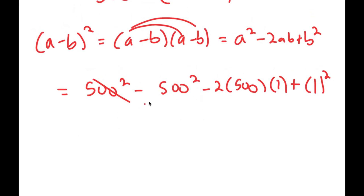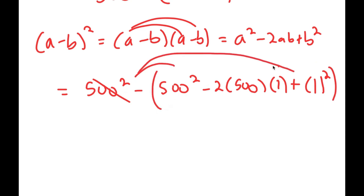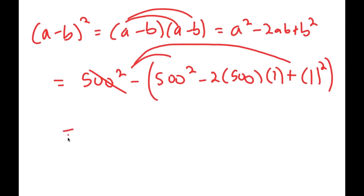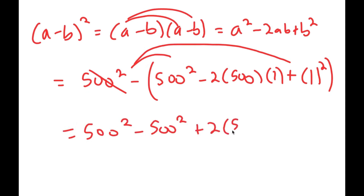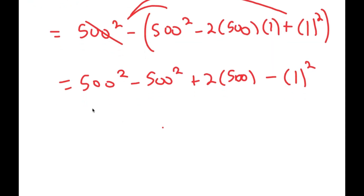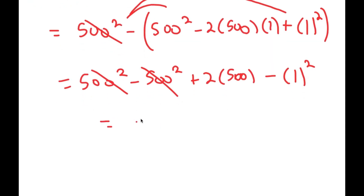However, this is actually going to be in parentheses, so the negative sign distributes. This turns into 500 squared minus 500 squared plus 2 times 500 times 1 minus 1 squared. Now these two 500 squared terms cancel out, so I get 1000 minus 1, which is equal to 999.